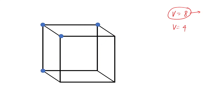You have to try a different, completely symmetric selection, because the regular tetrahedron is completely symmetric. On the top face, choose the diagonally opposite vertices; on the bottom face, use the other pair of diagonally opposite vertices. If you make your selection like that...